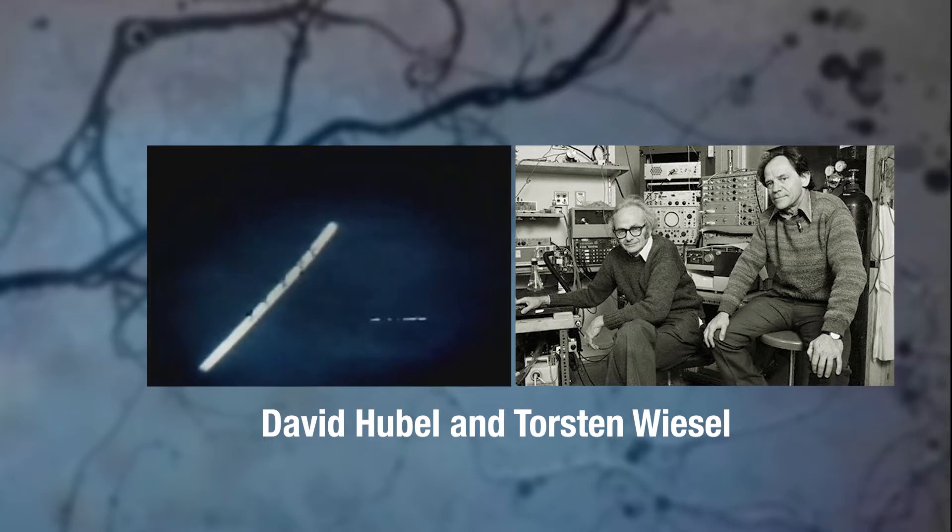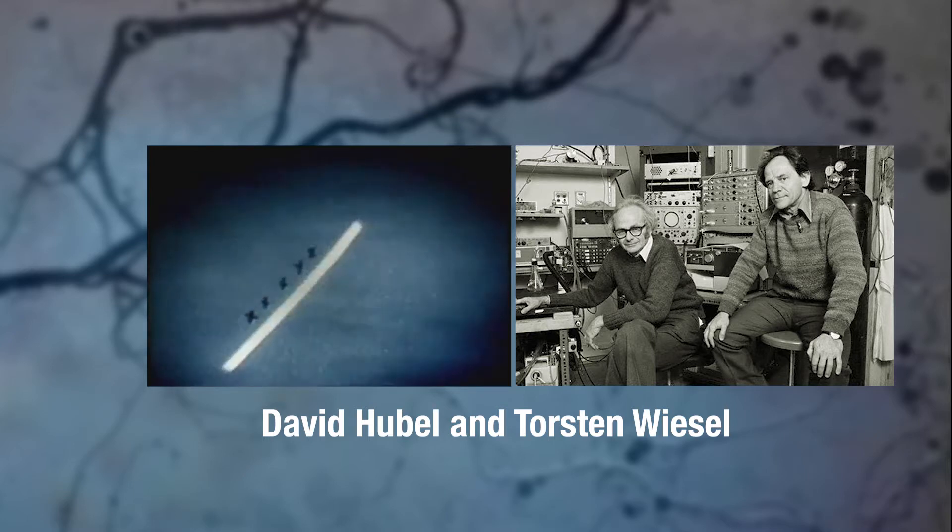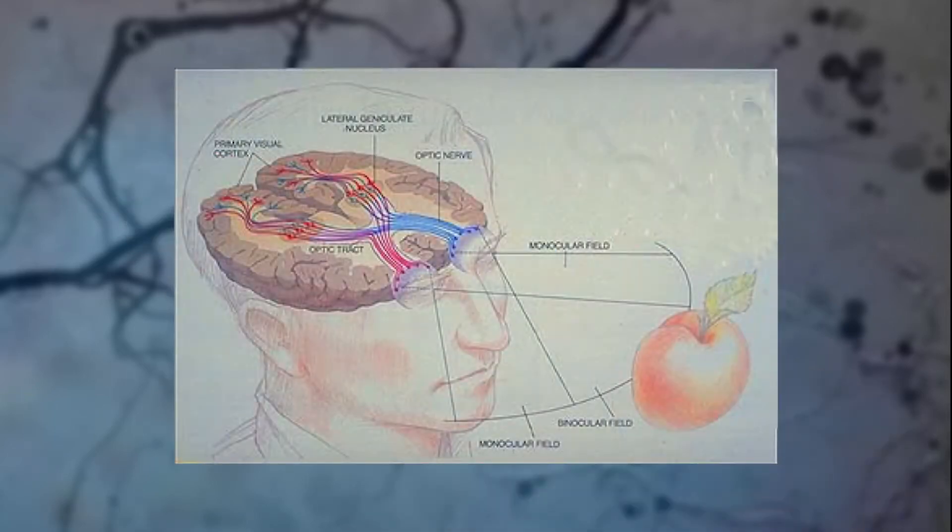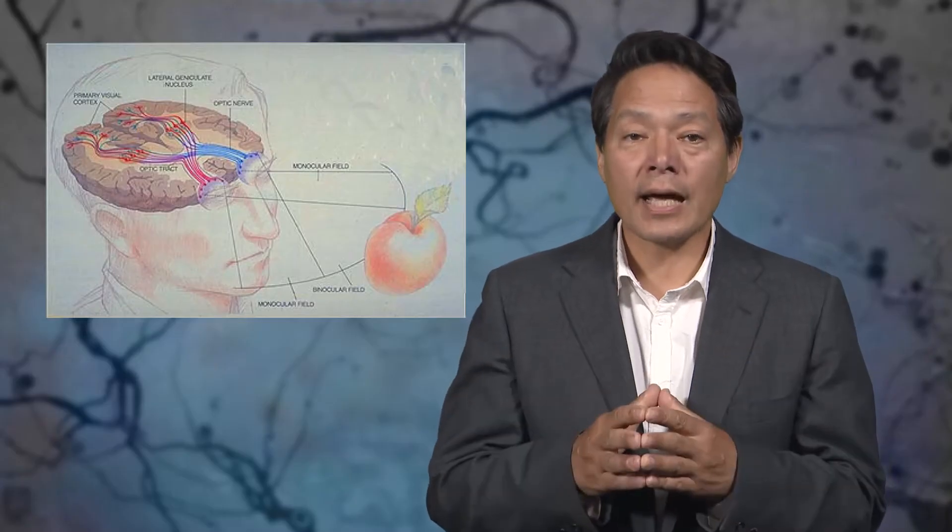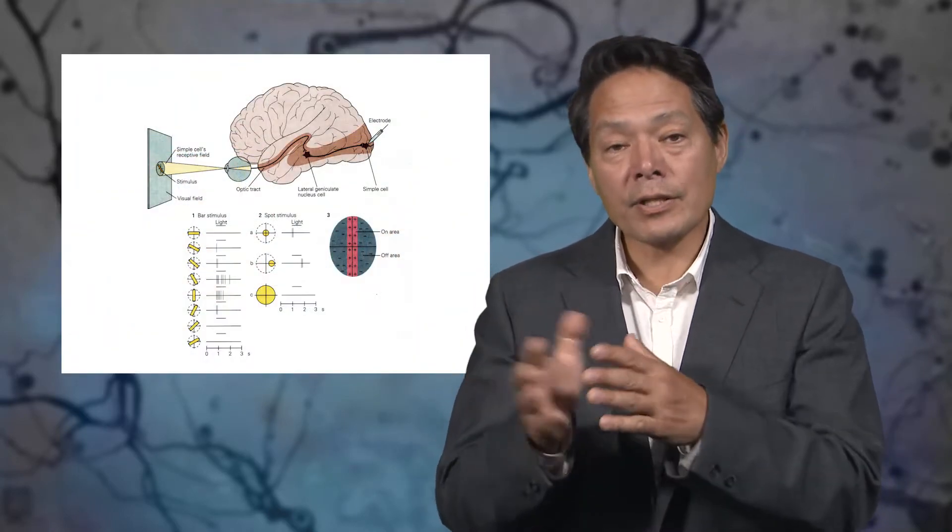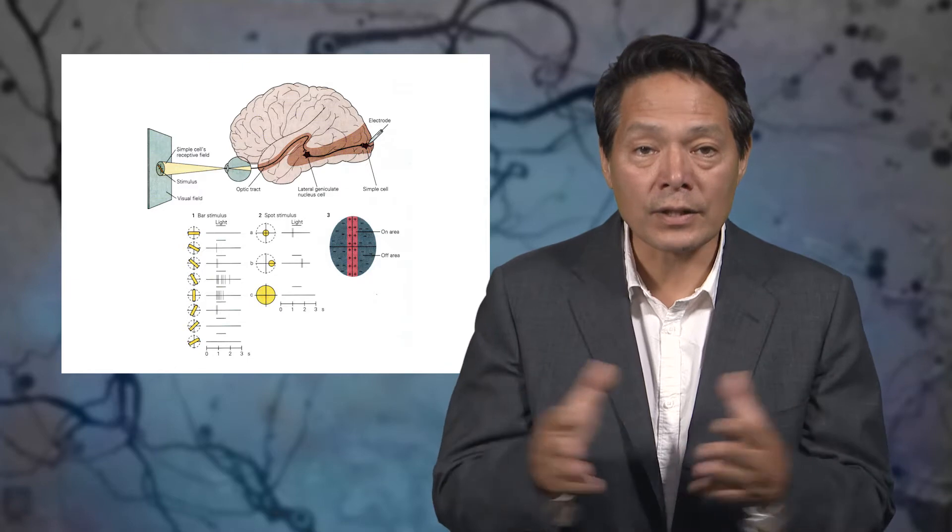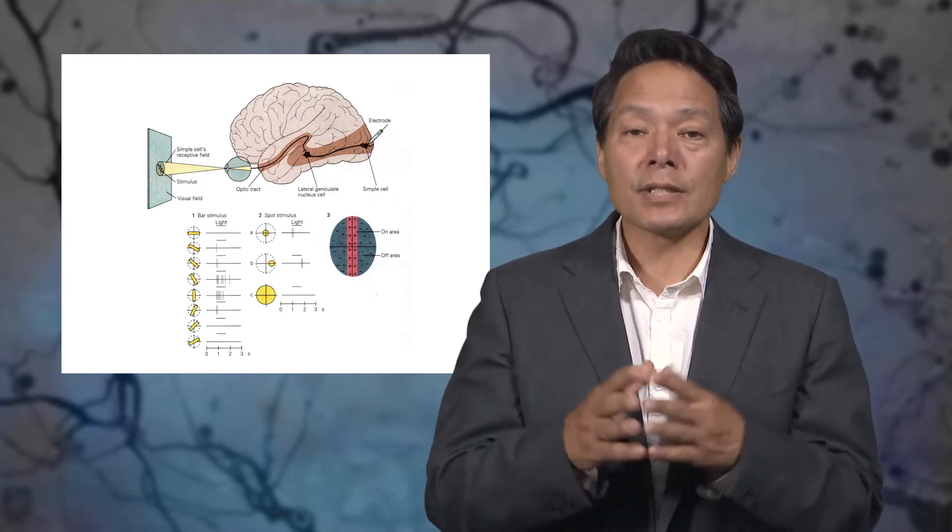They argued that a simple cell could be wired up by having earlier detectors that themselves responded best to a spot of light all converge on a downstream neuron, namely the so-called simple cell, which would only fire if it received simultaneous action potentials from a subset of these earlier cells. These earlier cells, found in a part of the brain called the lateral geniculate nucleus of the thalamus, feed into V1. They tend to be excited by light falling on one spot on the retina and to be inhibited by light falling around this spot. These neurons are said to have an excitatory center and an inhibitory surround receptive field or response field, which is just that part of the retina that leads to a change in the cell's responses.